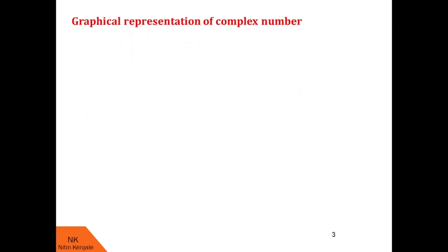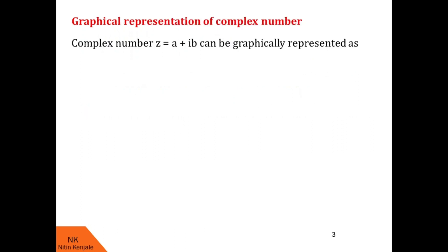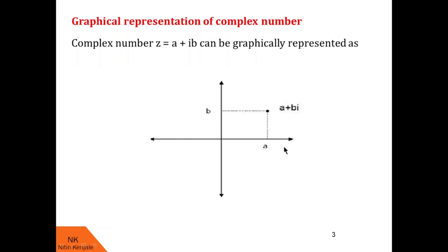Now let us discuss the geometrical representation of a complex number. A complex number z equal to a plus ib can be graphically represented as follows. Consider this plane which has the real axis as the x-axis and the imaginary axis as the y-axis. In this plane, a point represents complex number z equal to a plus ib. Since a is the real part, we draw it on the real axis, and b is the imaginary part, so we draw it on the imaginary axis. So the point (a, b) gives us the complex number z equal to a plus ib. Though this plane looks like a Cartesian plane, it is called the Argand plane.